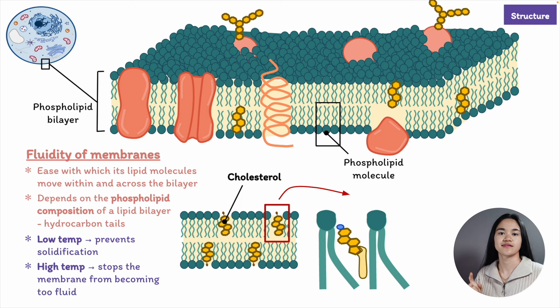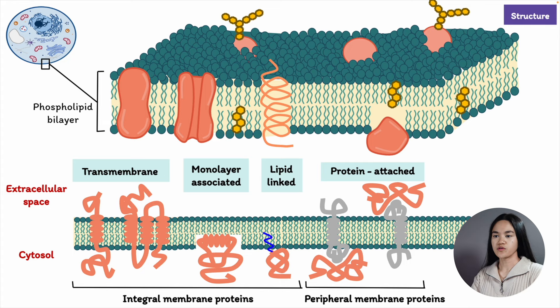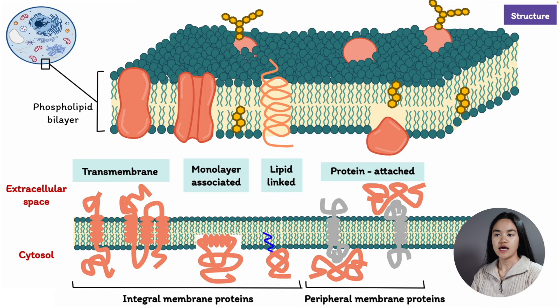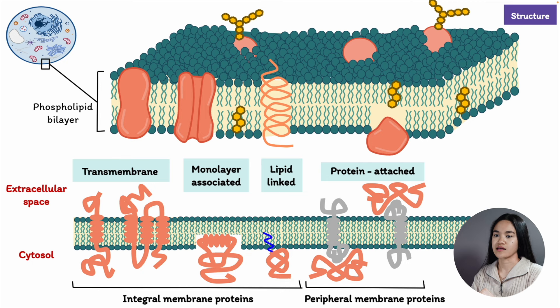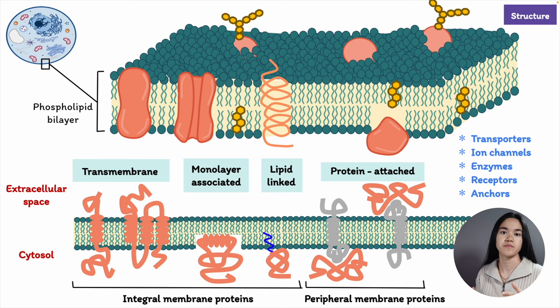Plasma membranes have various proteins embedded within them. There are two types: integral proteins and peripheral proteins. Integral proteins span the membrane bilayer — they can span the entire bilayer or extend only part way into the hydrophobic region. Those that span both layers are also called transmembrane proteins. These proteins have both hydrophilic and hydrophobic regions. They can act as transport channels for molecules and ions, function as enzymes to catalyze membrane reactions, be involved in signal transduction or cell-to-cell recognition, and act as attachments to the cytoskeleton and the extracellular matrix.